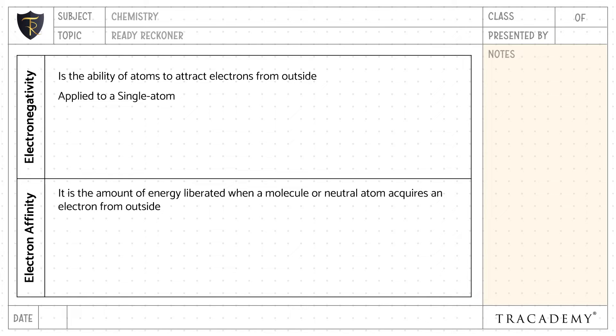Electronegativity is applied to a single atom. Electron affinity is applied either to an atom or a molecule. It is measured in Pauling units, whereas electron affinity is measured in kilojoules per mole or electron volts.